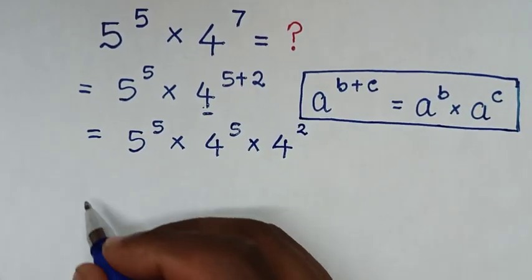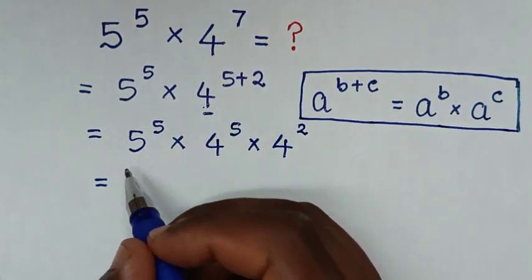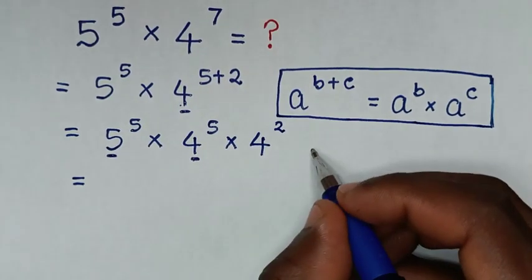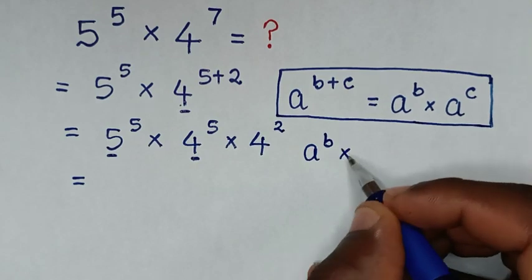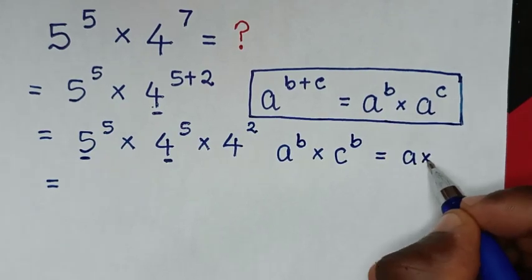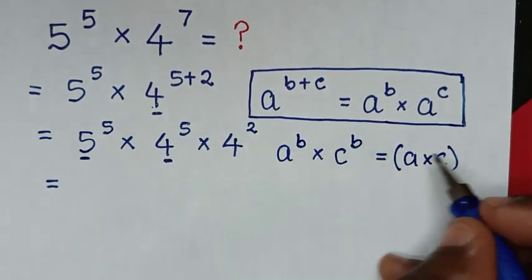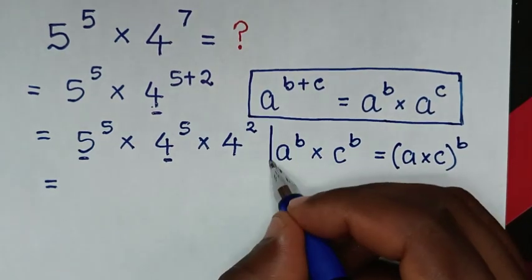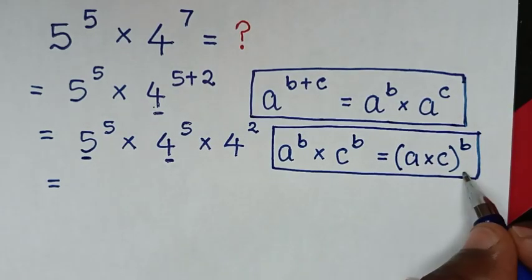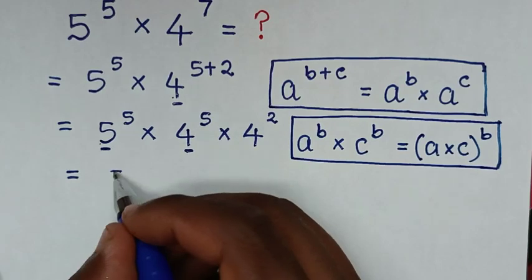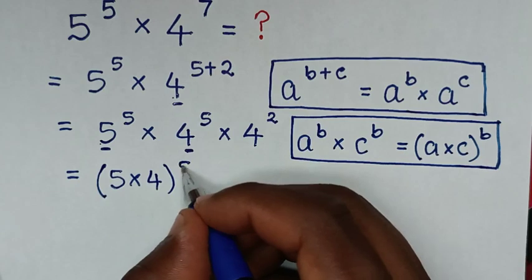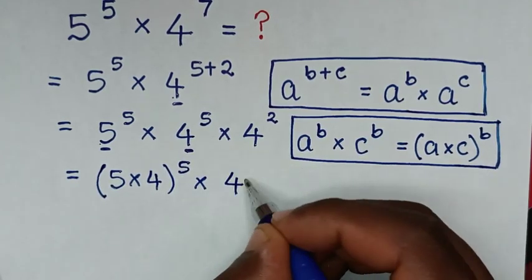The next step: we have 5 power 5 times 4 power 5, which is in the form of a power b times c power b, and that equals (a times c) to the same power b. So it will be in this form: (5 times 4) to the power of 5, then times 4 power 2.